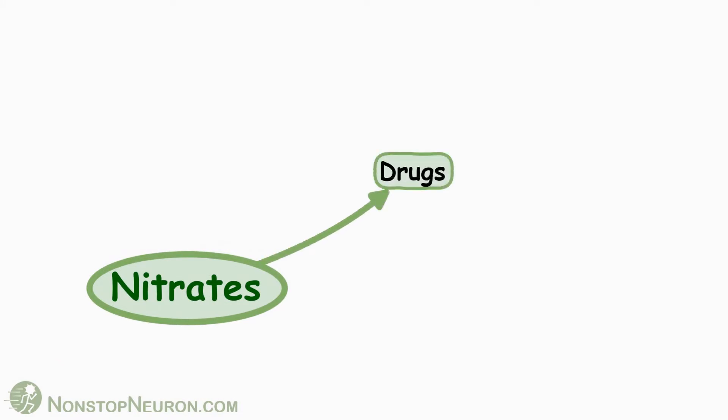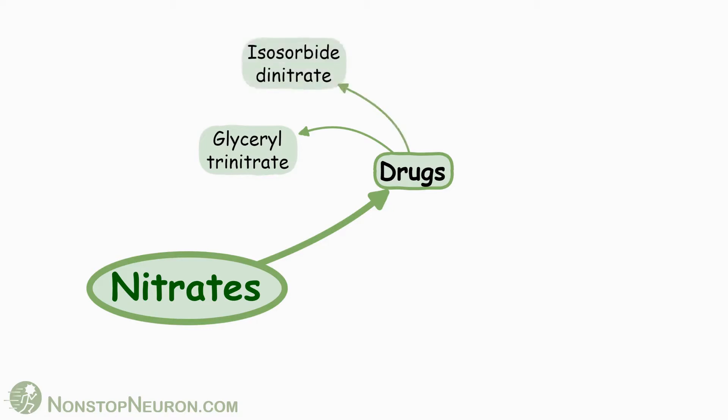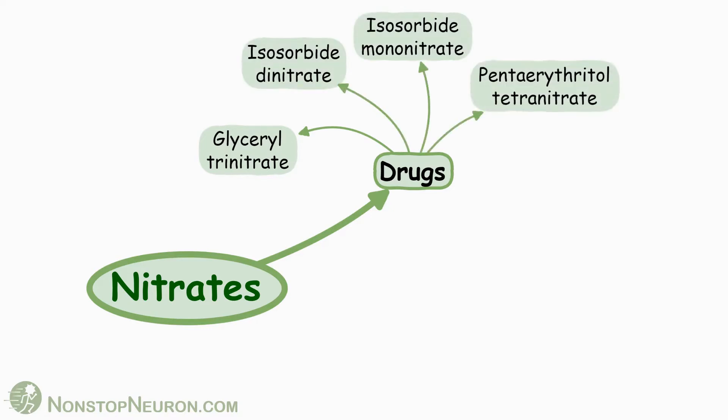Drugs in the nitrate group are glyceryl trinitrate or nitroglycerin, isosorbide dinitrate, isosorbide mononitrate, pentaerythritol tetranitrate, and erythritol tetranitrate.